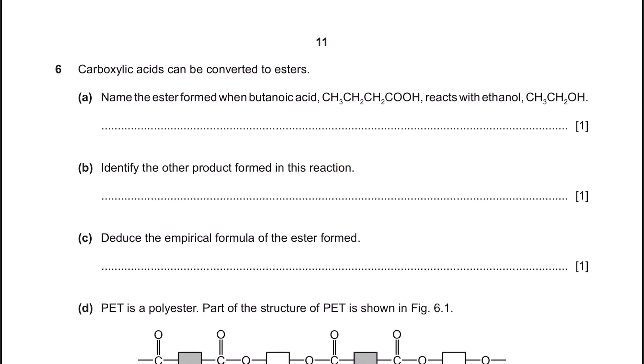Moving on to the last question. Question 6: Carboxylic acids can be converted to esters. This process is done by adding alcohol and you will get ester plus water. Question A: Name the ester formed when butanoic acid reacts with ethanol. When naming an ester, we will combine the alcohol name and the carboxylic acid. We place the alcohol at the front followed by the carboxylic acid. Alcohol being used here is ethanol, so it will become ethyl. And butanoic acid will be butanoate. And this would be the name of your ester: ethyl butanoate.